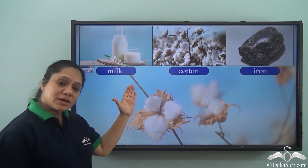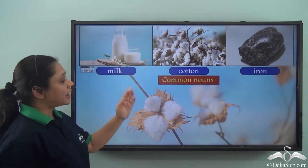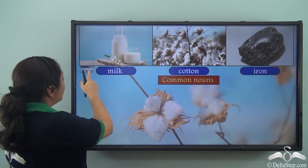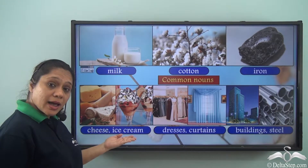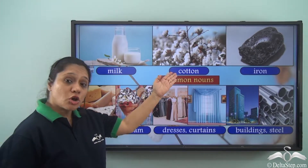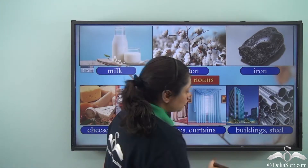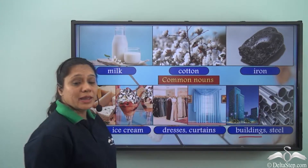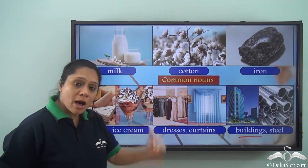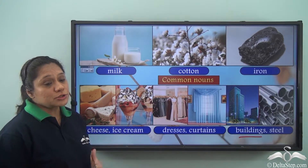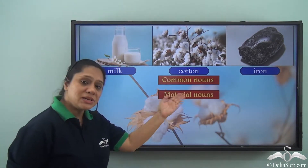Now all these words are nouns but what kind of nouns are they? They are all common nouns. From milk we make cheese and ice cream; we use cotton to make dresses and curtains; we use iron to make buildings or to make steel. So milk, cotton, and iron, which are common nouns, are used to make other materials.